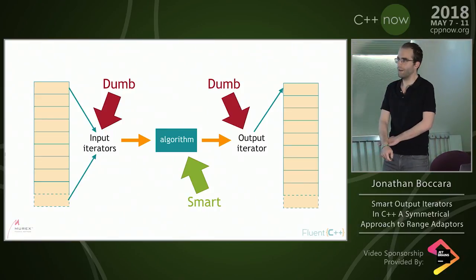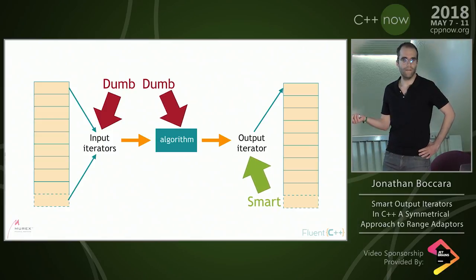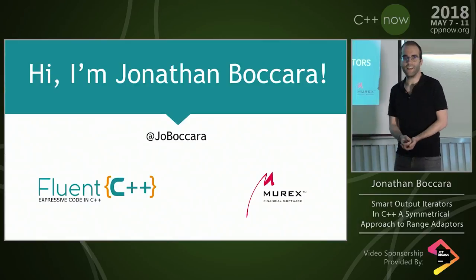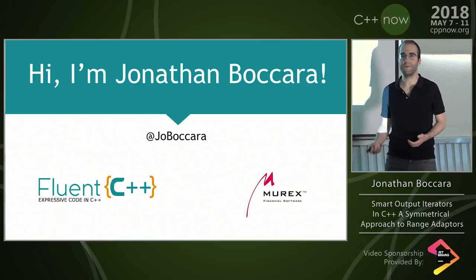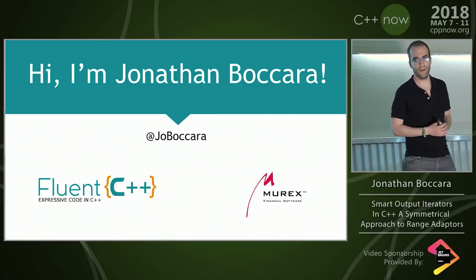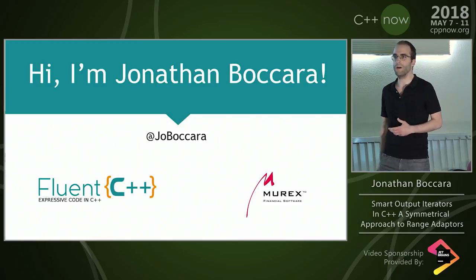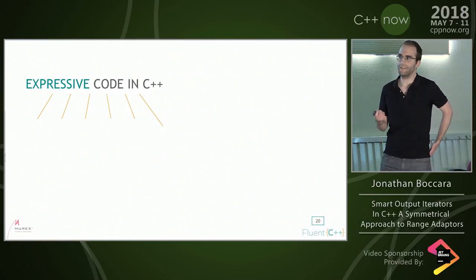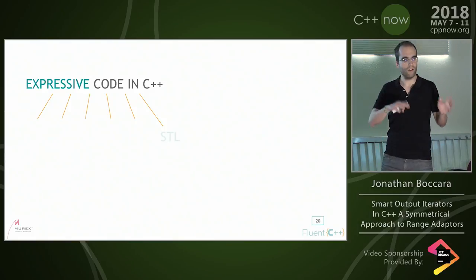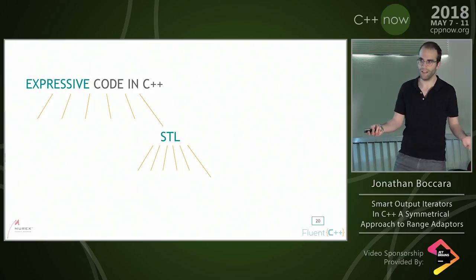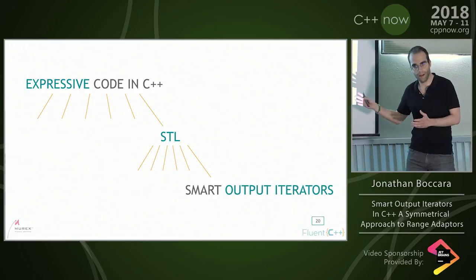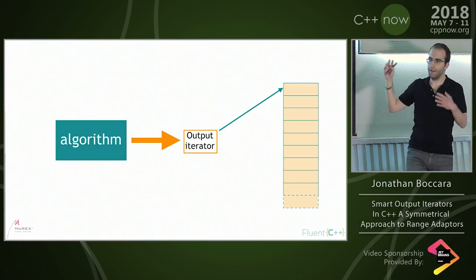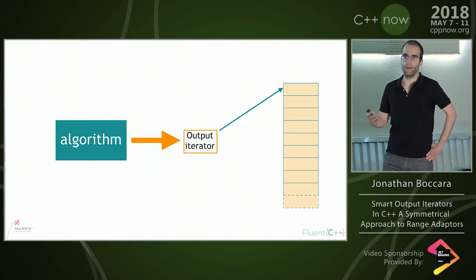Now, what if we put the logic on the output iterator? That would make a smart output iterator. And now we can actually start the presentation. So hi, I'm Jonathan Boccara. I run the Fluent C++ blog, focused on expressive code in C++ with an article every Tuesday and Friday morning. I also work at Murex as a team leader of a C++ software developer team. What keeps me up at night is searching how to write expressive code in C++, and one aspect of that is focusing on output iterators, in particular on smart output iterators.